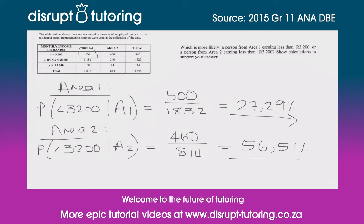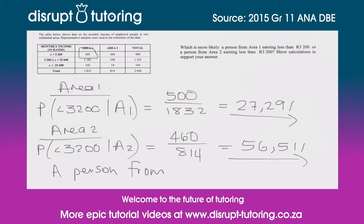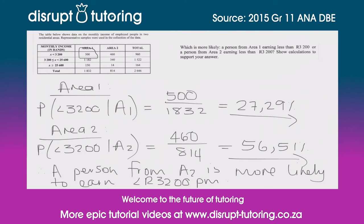Now we can evaluate which one is more likely. We're going to look for the probability that is higher, which is clearly area two. It is more likely that someone picked at random would be earning less than three thousand two hundred rand. We can conclude that therefore a person from area two is more likely to earn less than three thousand two hundred rand per month — and that will get you full marks for this question.